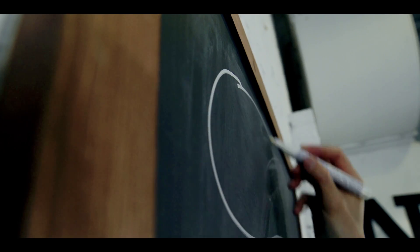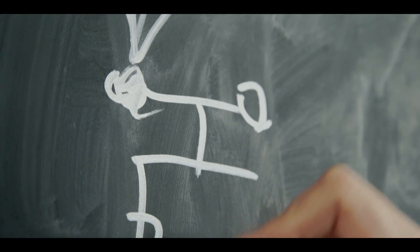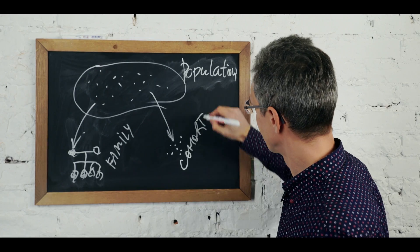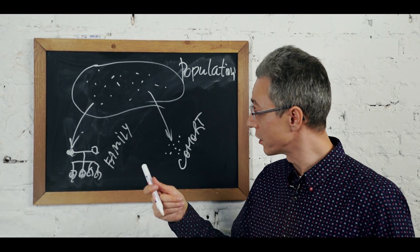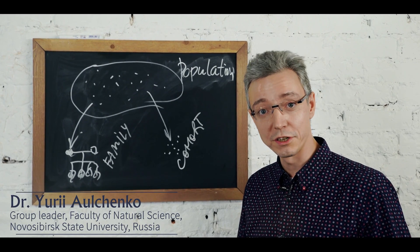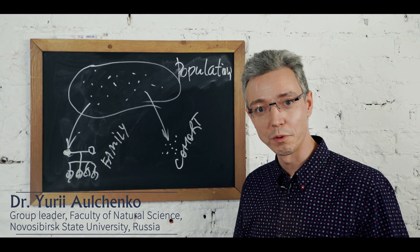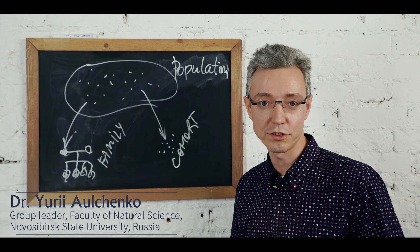The question is how do we identify these causative variants. We find these variants in specific families or cohorts. However, these are representatives of bigger populations. I am going to tell you about the rules which govern genetic diversity of populations.